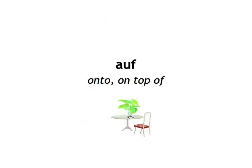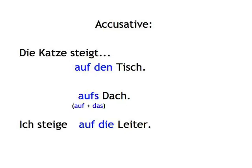Auf, meaning onto or on top of. In the accusative — remember the movie camera. Die Katze steigt auf den Tisch — the cat climbs onto the table. Die Katze steigt aufs Dach — the cat climbs onto the roof. Ich steige auf die Leiter — I climb the ladder.